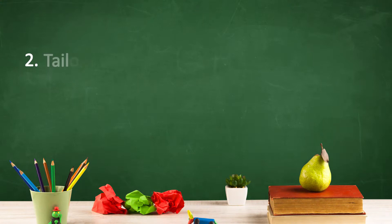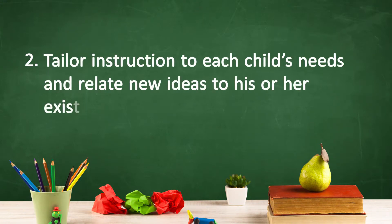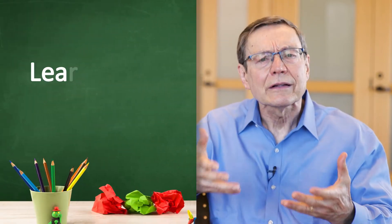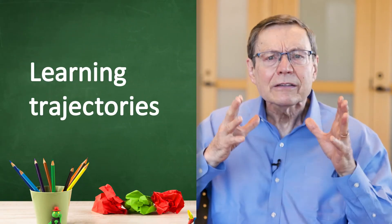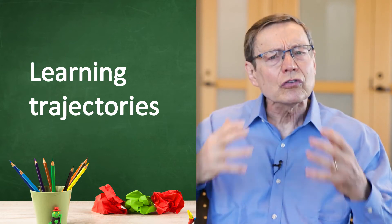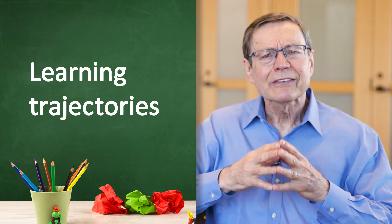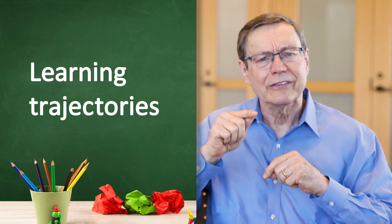The second way to carry out Recommendation 3 is to tailor instruction to each child's needs and relate new ideas to his or her existing knowledge. Teachers can use the information they learn from observation and assessment of a child's skills to design tailored activities. This is using learning trajectories — teachers determine the level of thinking along the developmental progression and then use instruction, environment, tasks, activities, and teaching strategies selected to help children learn the next level.